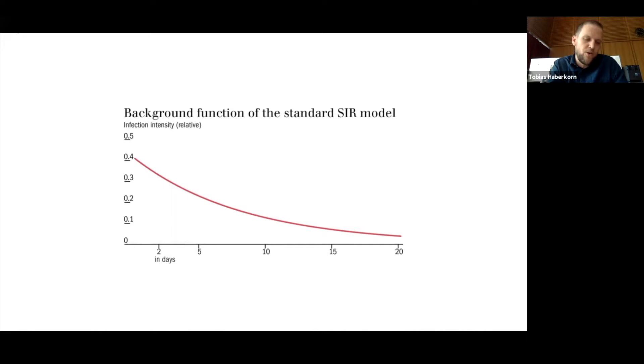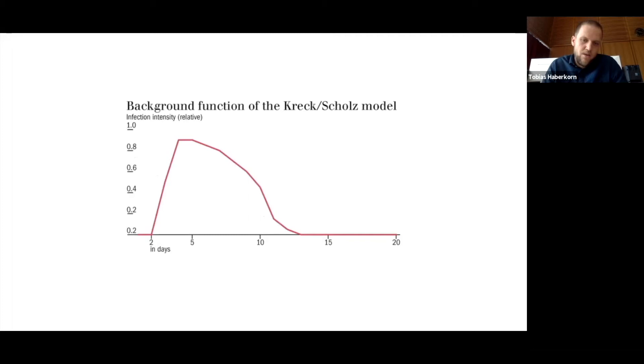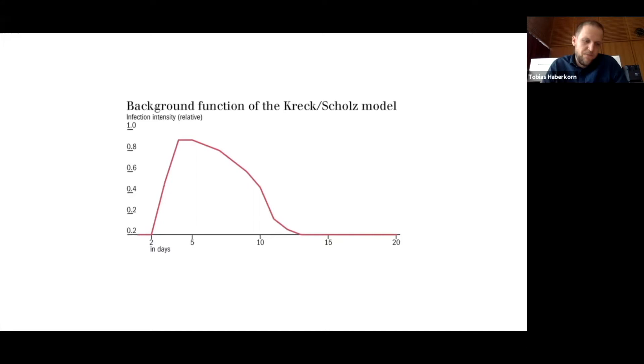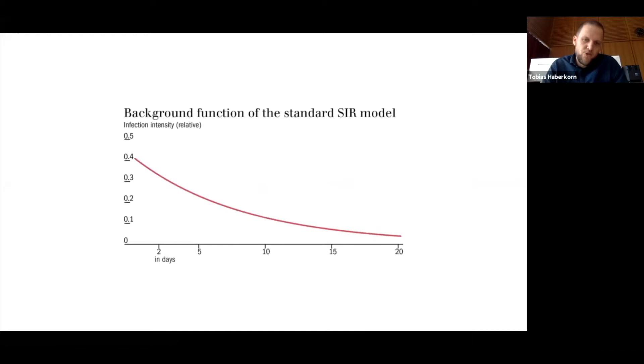We know from biological studies that there's a latency period of a couple of days where an infected person does not yet exhale contagious particles at all. Then the viral load in the throat starts to grow, peaks at the onset of symptoms, and then descends again. This approximation, which is from Kreck and Scholz's model, is an attempt to map the real biological distribution of infectiveness of a single infected person. You see obviously the difference between this curve and this curve is quite striking. The background function of SIR is much more unrealistic, of course, and that's the point where these mathematicians attack the application of SIR.